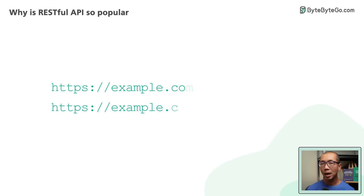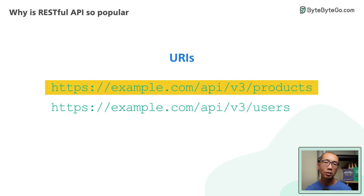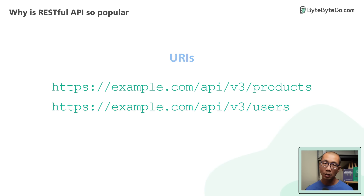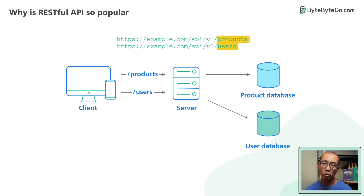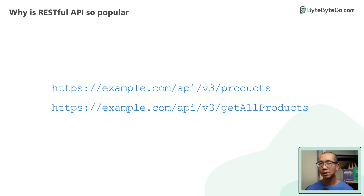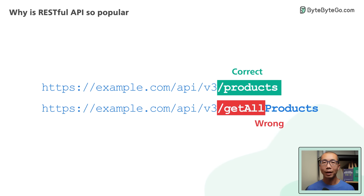A RESTful API organizes resources into a set of unique URIs, or Uniform Resource Identifiers. The URIs differentiate different types of resources on a server. Resources should be grouped by noun and not verb — for example, an API to get all products should be /products and not /getAllProducts.